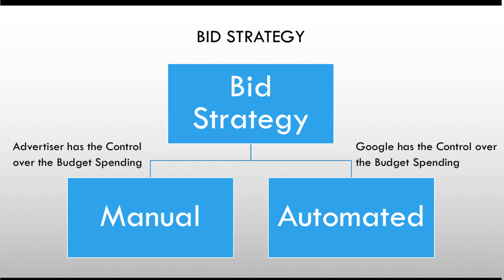In the manual method, you, the advertiser, are in control — in charge of how much you are willing to pay. In the automated bidding strategy, Google has the control over how much you are going to pay per click. Your bid in this case can be low or it can be high depending upon the real-time bidding process and your competition.